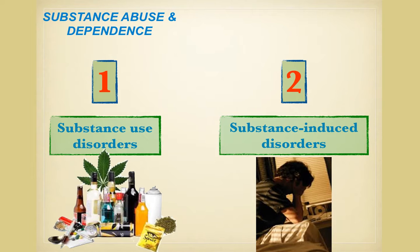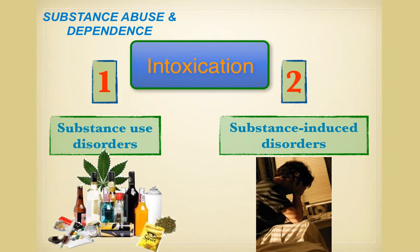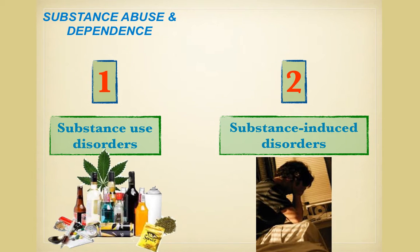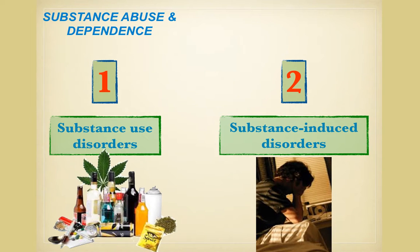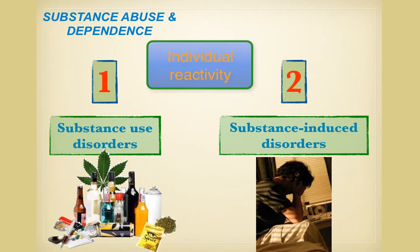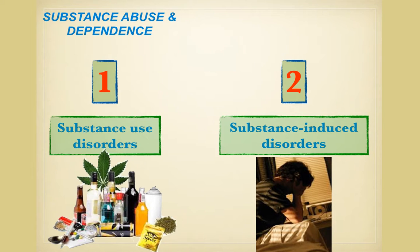Intoxication is a state of drunkenness or being high. What intoxication looks like depends on the substance being used, the dosage, the person's reactivity, and to some degree the user's expectations. Extreme intoxication can lead to death. Substance use disorder may continue over a long period and can progress to more severe states, even to feeling helpless to control their use.